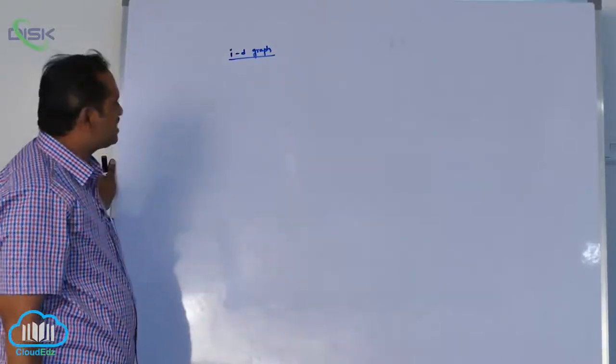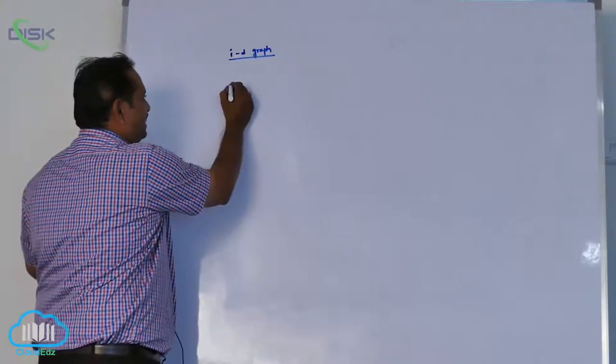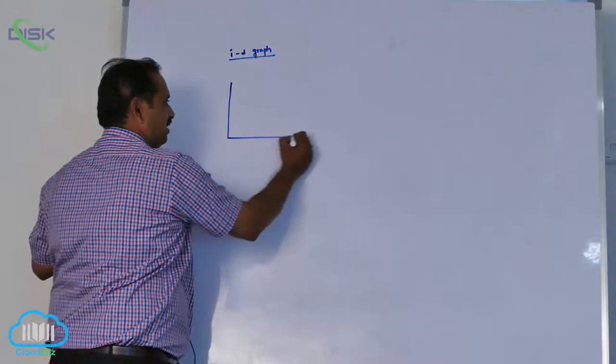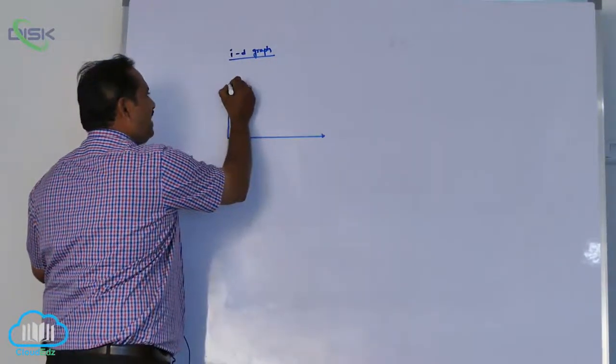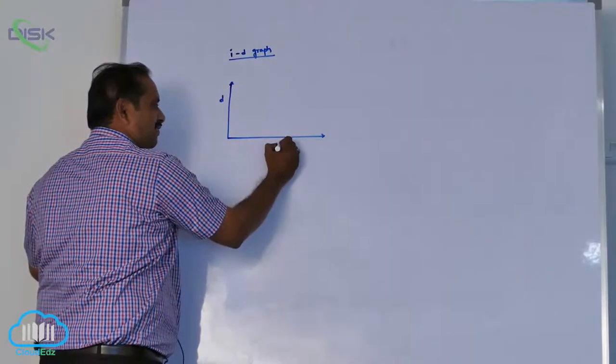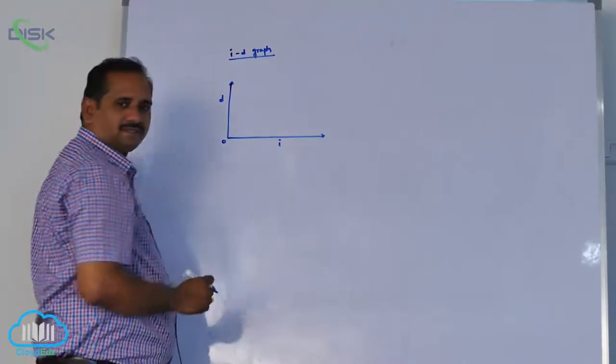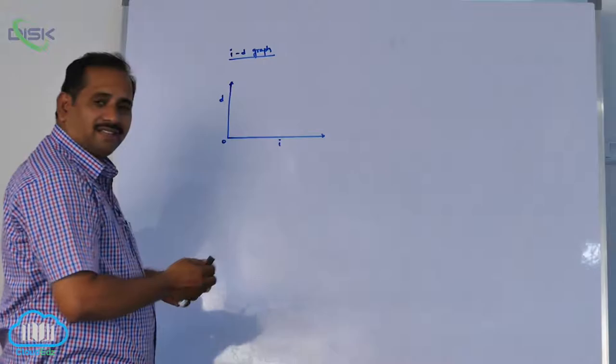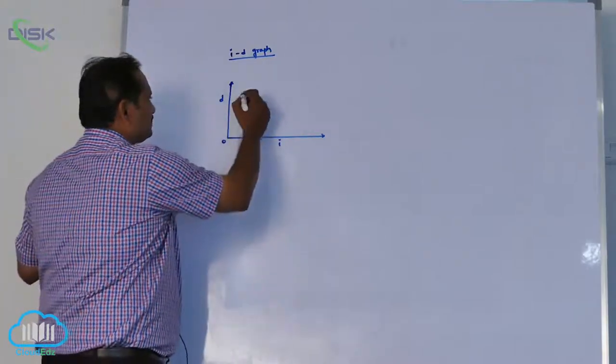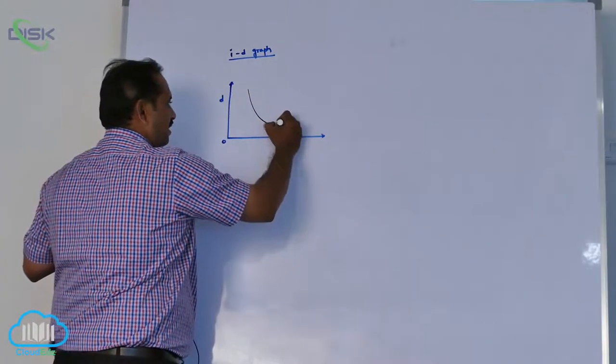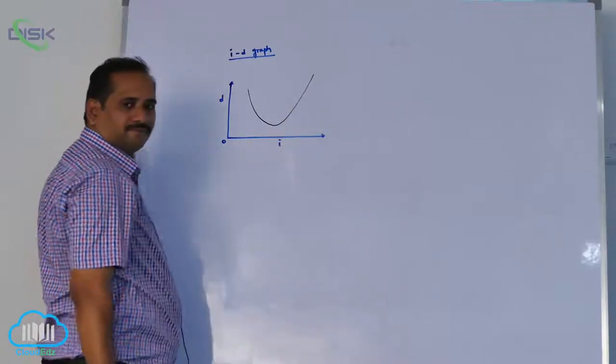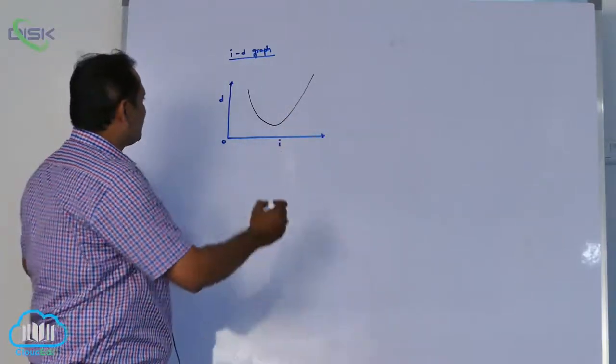Angle of incidence versus deviation graph, if I plot it for different angles of incidence, the graph is like this: parabolical, open parabola, concave open parabola.